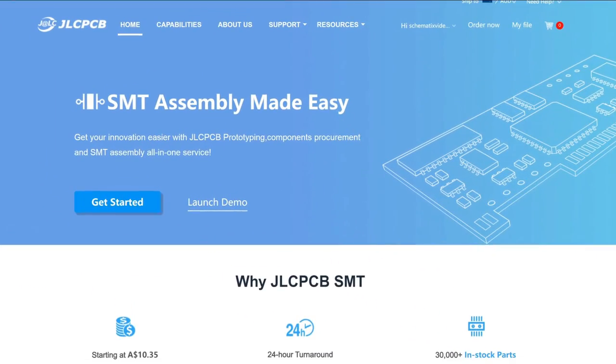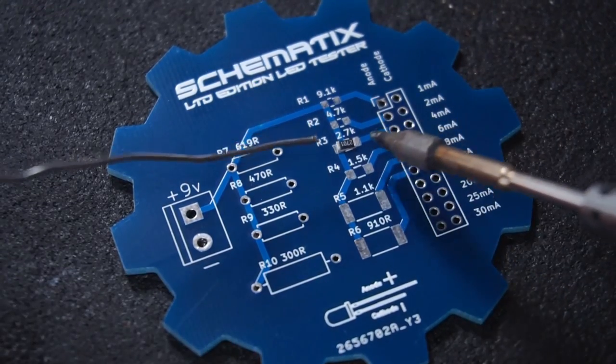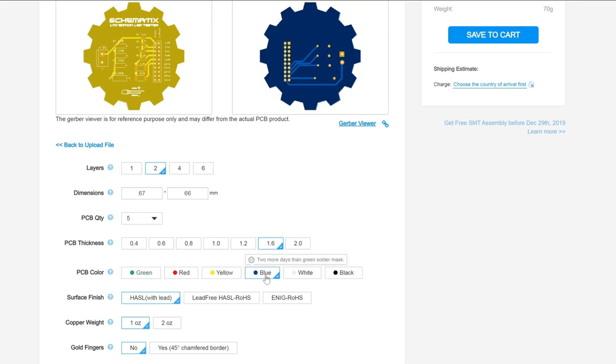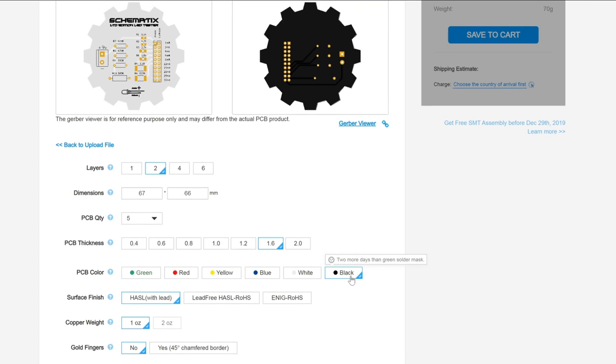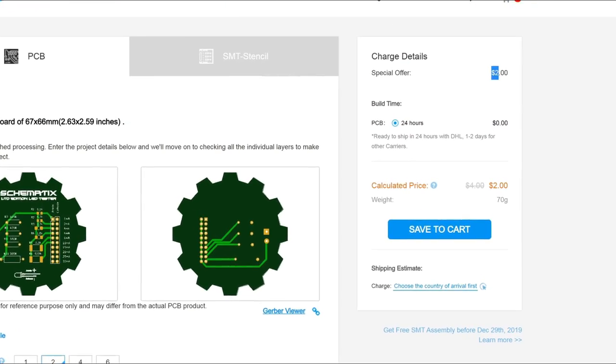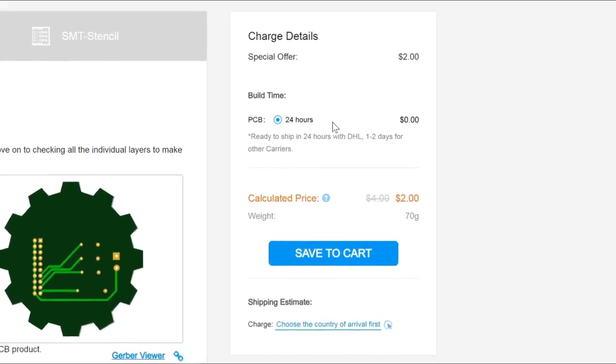JLCPCB now offers SMT assembly service allowing their customers to receive complete ready-to-use circuit boards right out of the box without the need to solder fiddly surface mount components. With a multitude of design options, fast production time, and with five PCBs costing less than a cup of coffee, give JLCPCB your next PCB project.